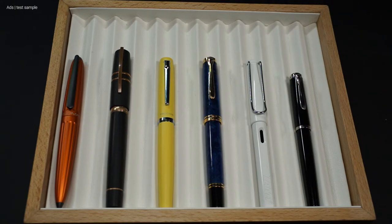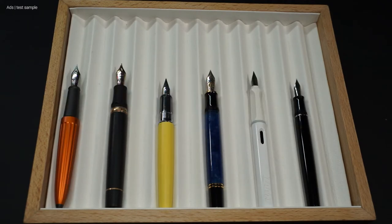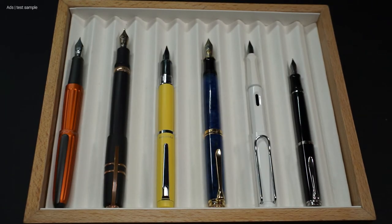When closed, the Procyon is in the midfield. When open and with a cap posted, it gets a little smaller in comparison. Without the cap, it is the same length as the P205. And with the cap posted, it becomes a bit longer again.